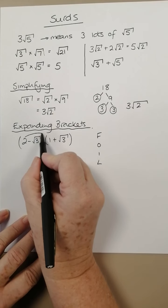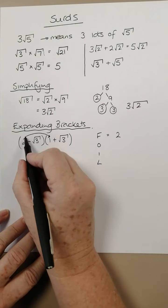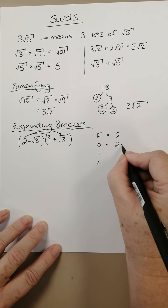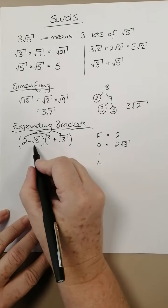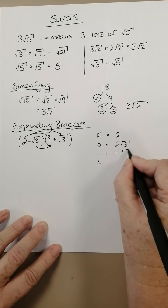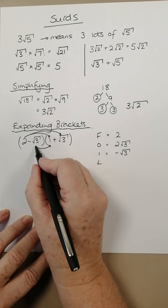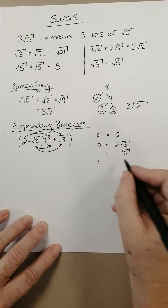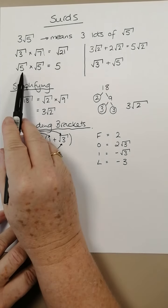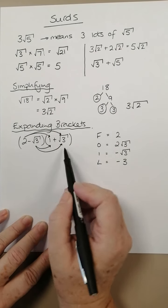So 2 times 1 is 2. 2 times root 3 is 2 lots of root 3. Minus root 3 times 1 is minus root 3. And minus root 3 times root 3 is minus 3. Remember what I said up here, root 3 times root 3 is going to be 3, so minus 3.